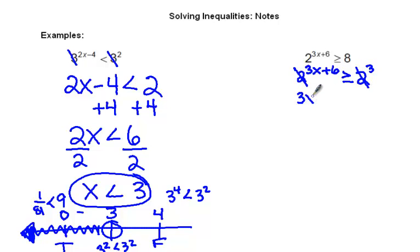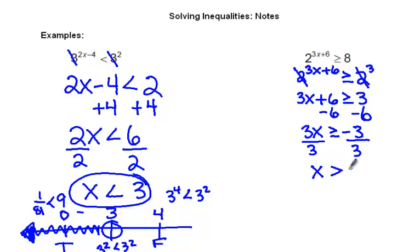And we get 3x plus 6 is greater than or equal to 3. Subtract 6 from both sides. You get 3x is greater than or equal to negative 3. Divide by 3. You get x is greater than or equal to negative 1.